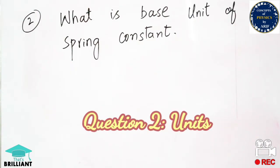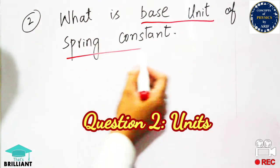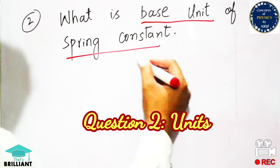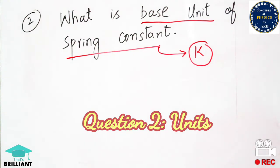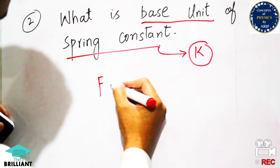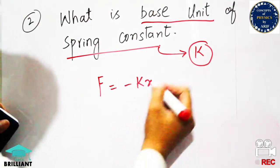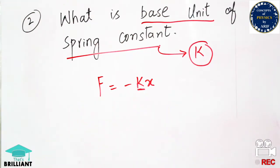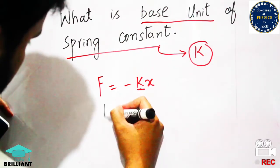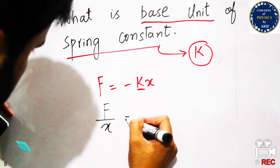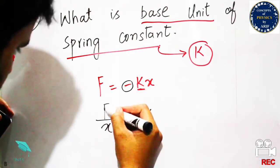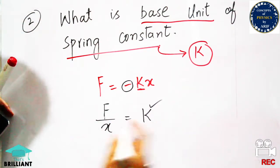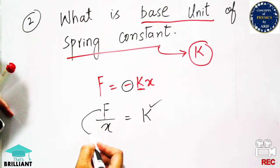Question 2 asks: what is the base unit of spring constant K? According to Hooke's law, F = −KX. We are dealing with units, so we ignore the negative sign. Rearranging gives K = F/X. The unit of force is Newton and the unit of displacement X is meters, so units of K are Newton per meter.